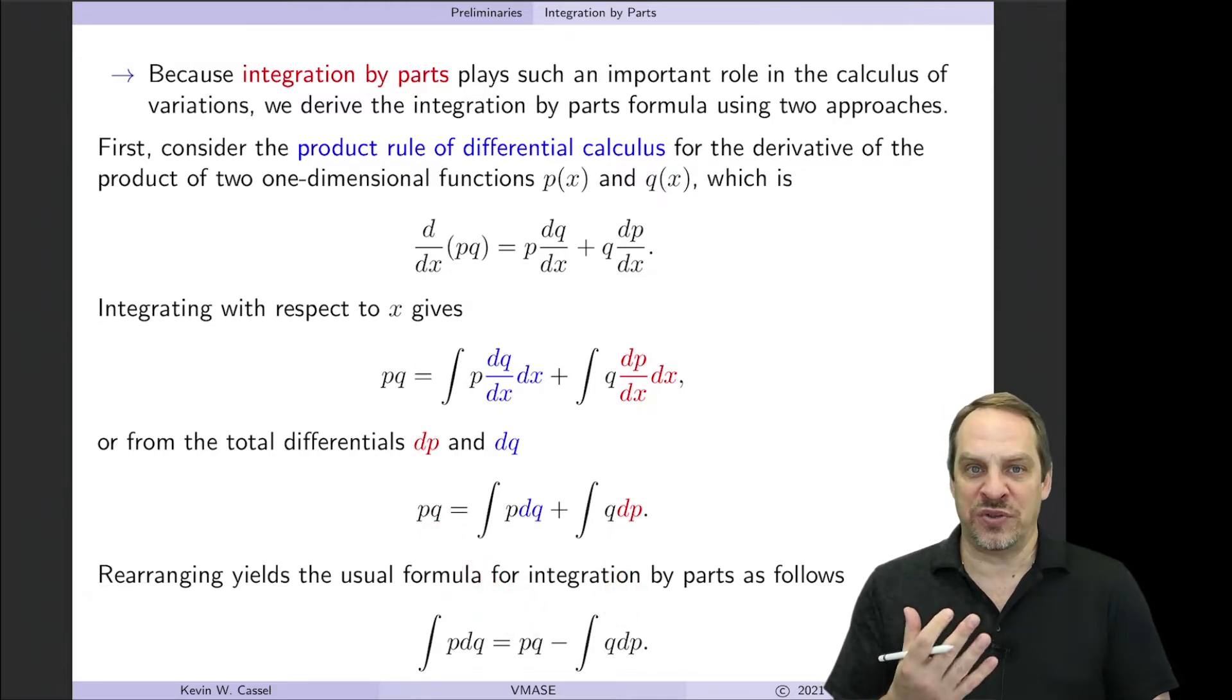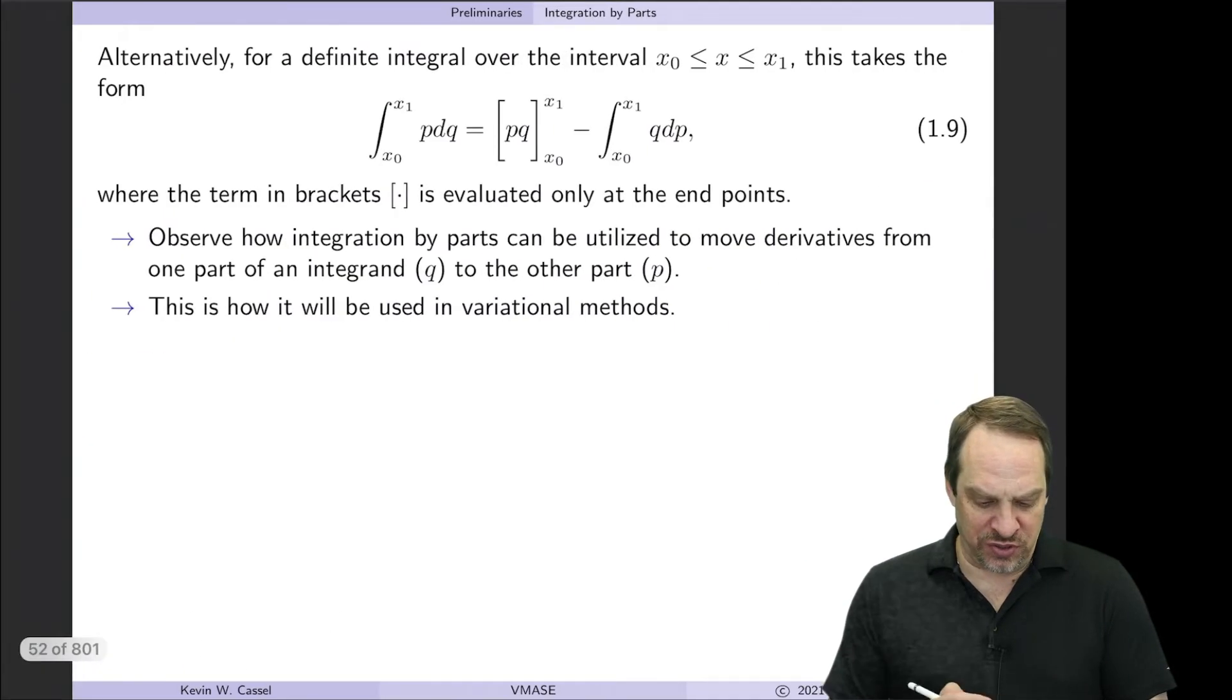And that's the integration by parts formula. Now if we have a definite integral over an interval in x from x₀ to x₁, then the integrals reflect those limits of integration. And the pq term is evaluated at the endpoints x₀ and x₁. And this is the form that we're going to be using in the context of the calculus of variations.